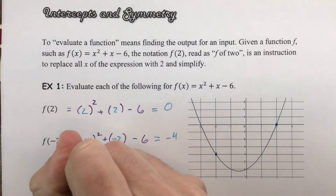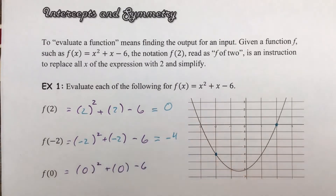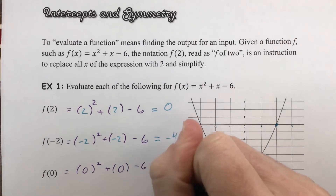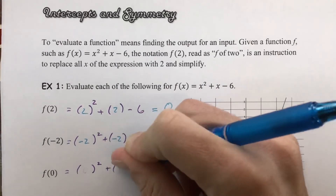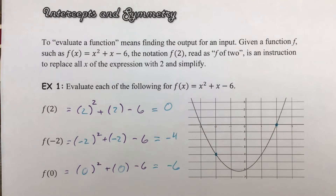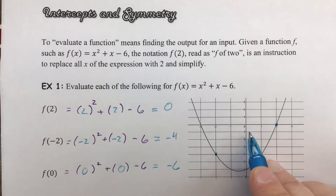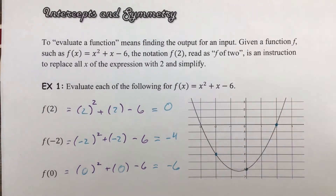And last, f(0). If we plug in a 0 for all the x's, that term is 0, that term is 0, and that is a negative 6, which will give you negative 6 in the end. That point at x = 0, you would go down 6 units and you end up with that spot.